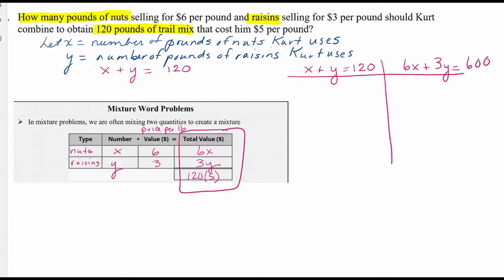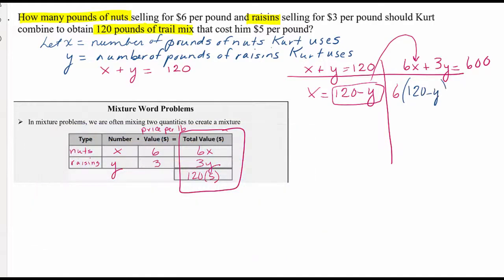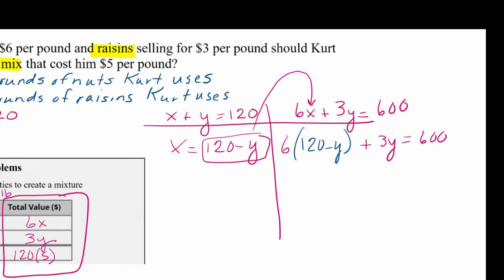Let's solve for x: x equals 120 minus y. We substitute this into the second equation. I recommend you pause the video here, distribute and combine terms, and solve for y to see if you get the same answer.